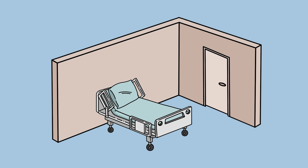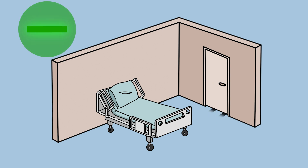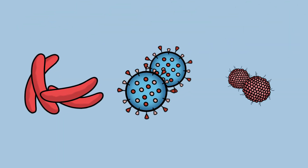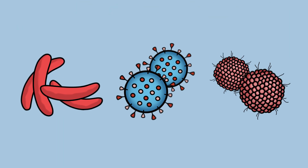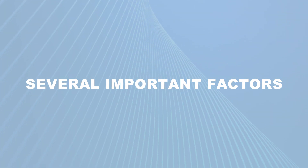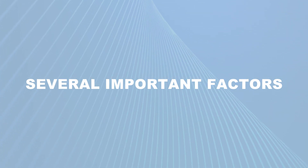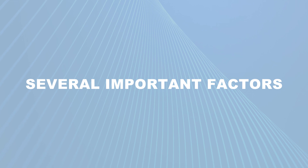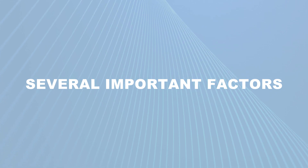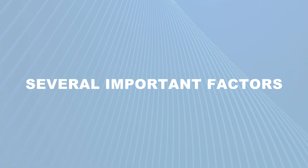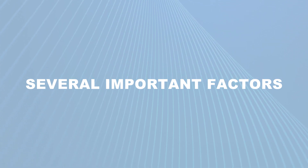AII rooms are special rooms that are always sucking air in from surrounding areas, making them negative pressure rooms. They are designed for patients who have a known or suspected airborne infection such as tuberculosis, measles, or chickenpox. There are several important aspects of AII rooms that facilities operations personnel must understand to ensure that everyone in the building remains safe and that patients are getting the best possible care.